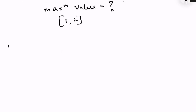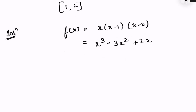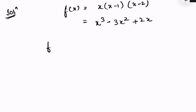To solve this question, let's first expand f(x). f(x) equals x times (x minus 1) times (x minus 2), which expands to x cubed minus 3x squared plus 2x. To find the maximum, we will first differentiate f(x).